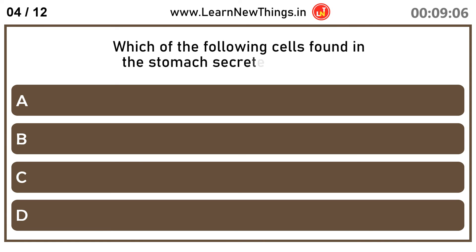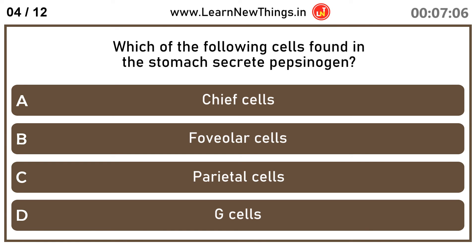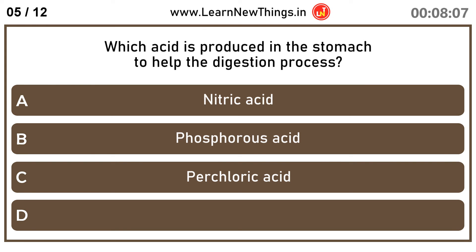Which of the following cells found in the stomach secrete pepsinogen? Chief cells. Which acid is produced in the stomach to help the digestion process? Hydrochloric acid.